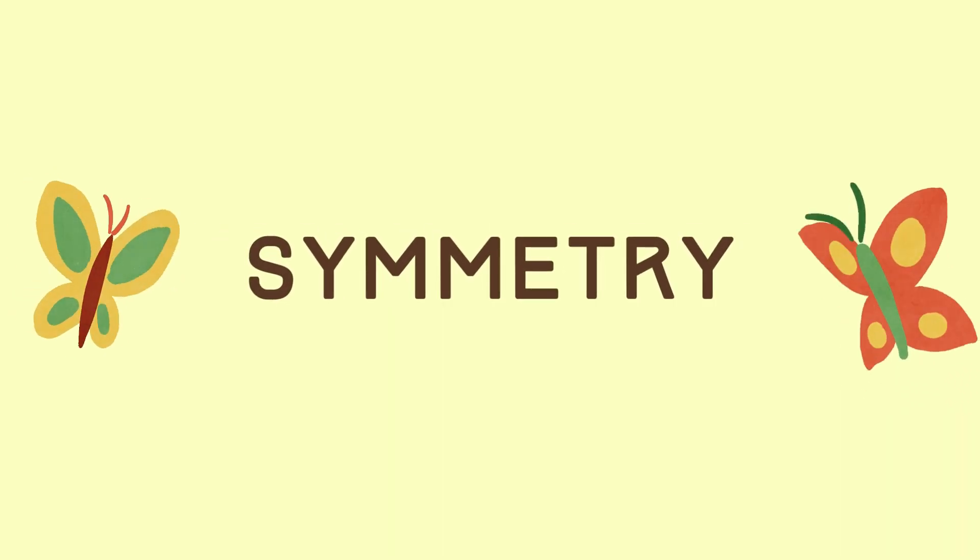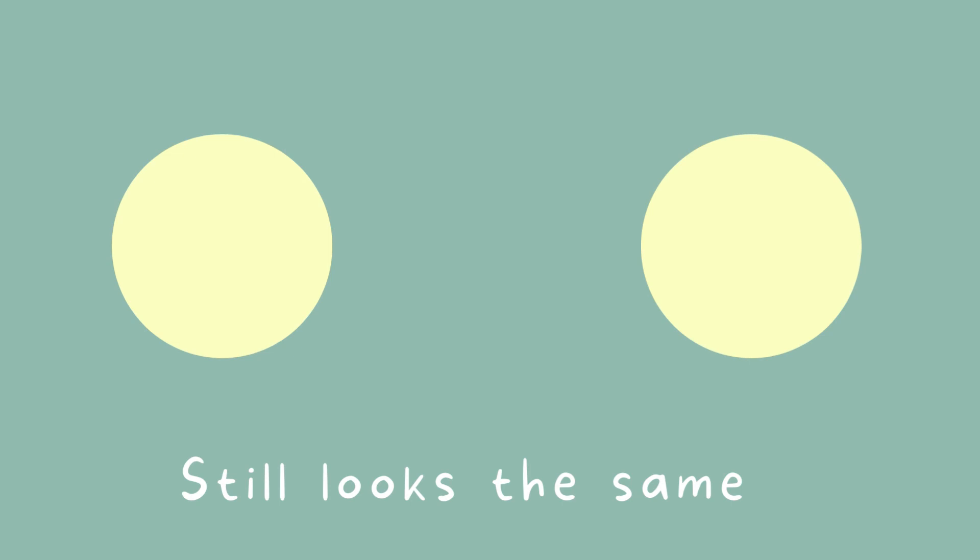We refer to an object as having continuous symmetry when we can apply a transformation to it and it remains looking exactly the same. Take this ball, for example. I can rotate it, move it right to left, but it still always looks the same.